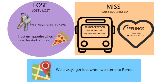There is something else. If you look at the light blue rectangle, I give you another example: 'We always get lost when we come to Rome.' This means that we can't find our way in Rome. If you don't understand the verb 'to get,' there is a lesson on my channel — I advise you to go there and take a look.